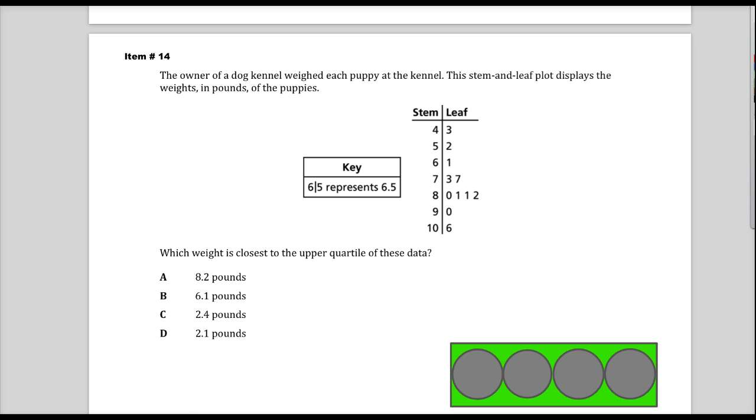The first thing that we need to do when we work with stem and leaf plots is write out all the numbers. The nice thing about a stem and leaf plot is that it allows us to already have the numbers in numerical order. However, the downside is there's a lot of numbers in there. As the key shows here, 6-5 means 6.5. That's what they want because you're weighing pounds and some of them are little dogs.